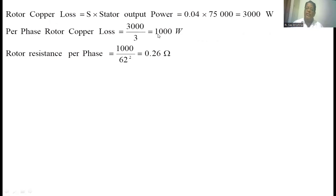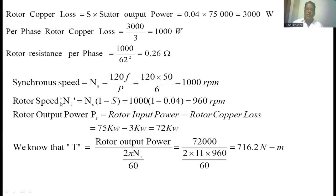The resistance per phase equals the per-phase copper loss divided by the square of the per-phase current. Substituting the values we get 0.264 Ω. The synchronous speed: the problem states 6 poles, so ns = 120f / p = 120 × 50 / 6 = 1000 rpm. The rotor speed nr = ns × (1 − s) = 1000 × (1 − 0.04) = 960 rpm.